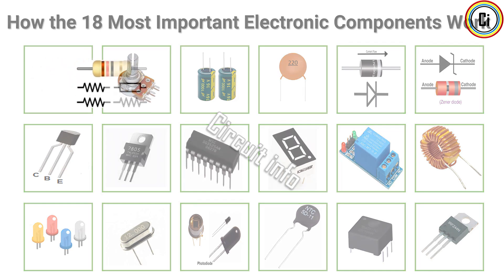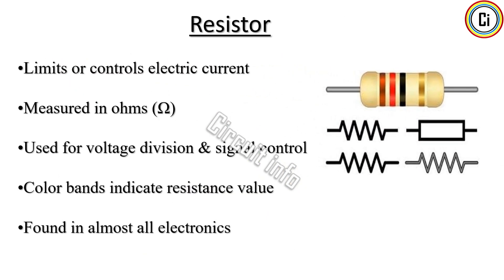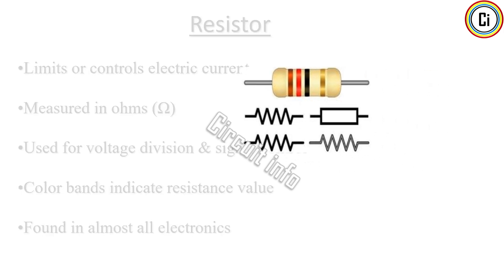A resistor is one of the most fundamental components in electronics. Its main job is to limit the flow of electric current, helping protect sensitive components from damage. Resistors also divide voltage, adjust signal strength, and control circuit timing when combined with capacitors. They come in fixed and variable types, and their resistance is measured in ohms. Color bands printed on their surface indicate their resistance value. You will find them in almost every device, from smartphones to washing machines, ensuring circuits run safely under stable levels.